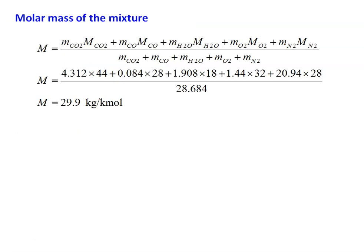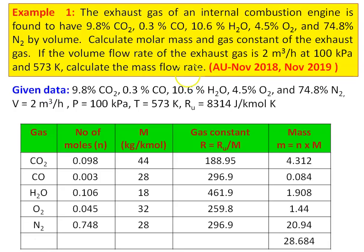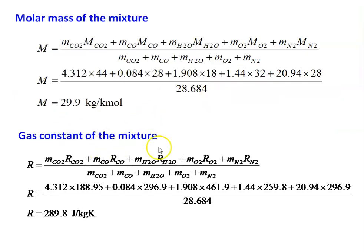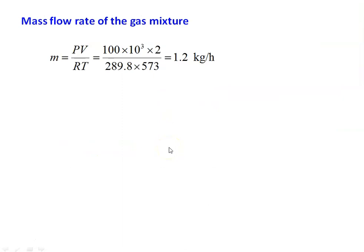So the answers for Example 1: the molar mass of the mixture is 29.9 kg/kmol, the gas constant is 289.8 J/kg·K, and the mass flow rate of the gaseous mixture is 1.2 kg/hr.